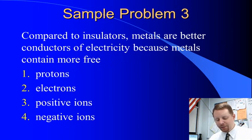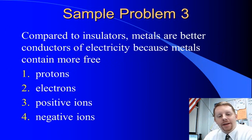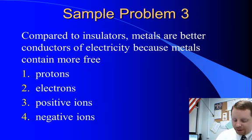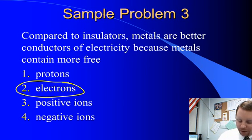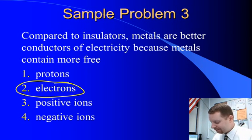One more sample problem: compared to insulators, metals are better conductors of electricity because metals contain more free what? Metals have more free charge carriers — and almost always the charge carrier is going to be electrons. So here we're talking about more free electrons in the metal.